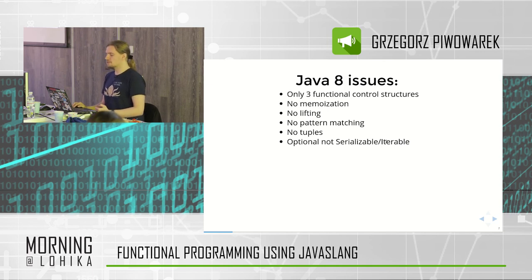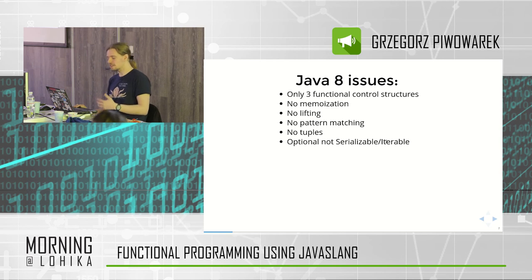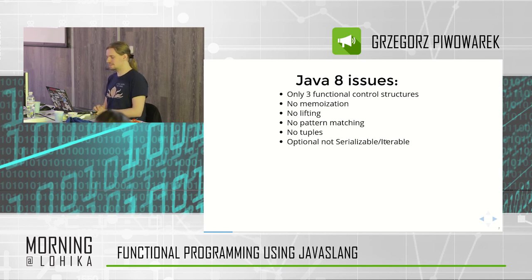Optional, for some reason, doesn't implement Serializable or Iterable. I've been to DevOps, and Stuart Marx has some very good explanation for why it's not implementing Serializable. Simply put, it wasn't intended to work like this — but it's a good explanation, it doesn't really convince me.